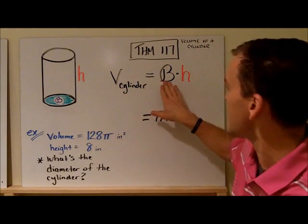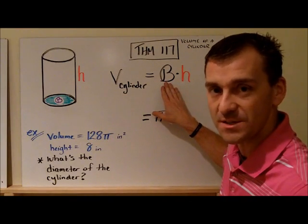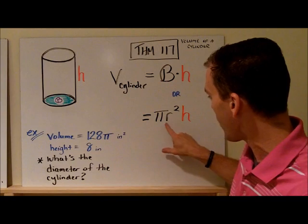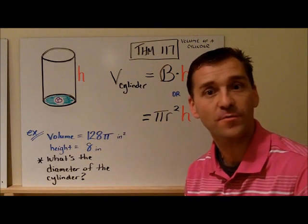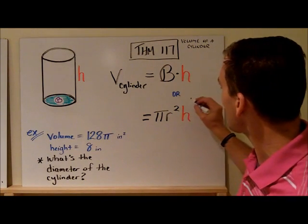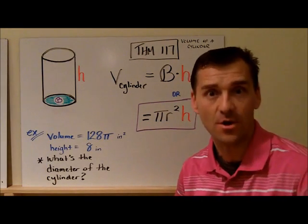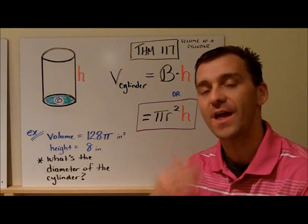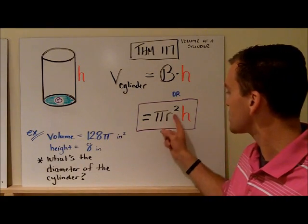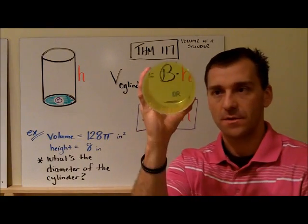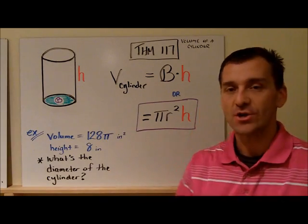We can replace this script B with a specific formula: pi r squared. That's the formula for the area of a circle. This is what you'll see on the PSSA formula sheet for the volume of a cylinder, because pi r squared is the same as the area of the base. Take it times height and you got your answer.